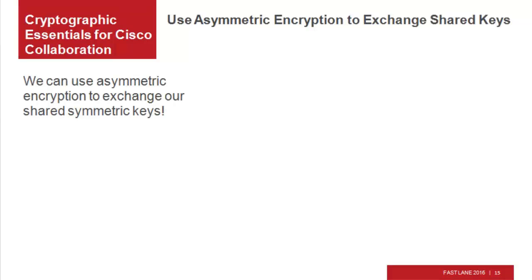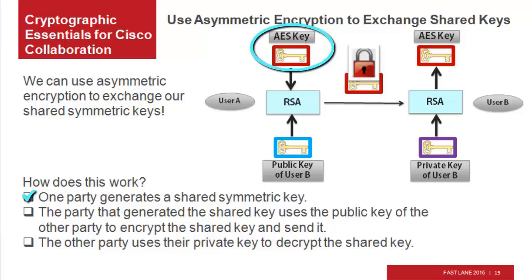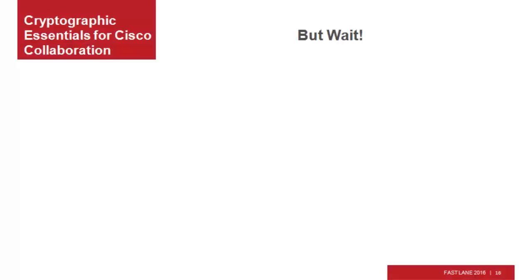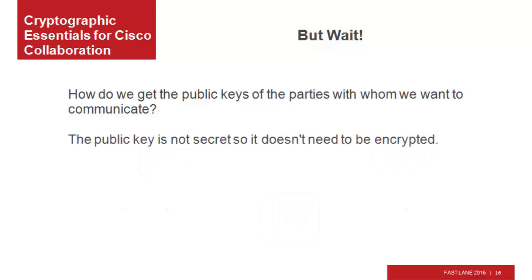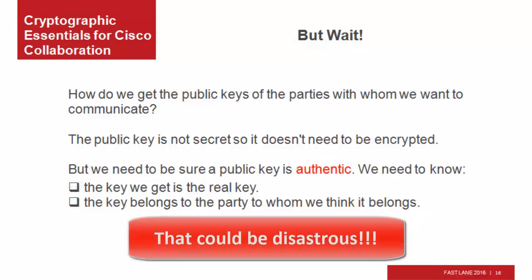We can use asymmetric encryption to exchange our shared symmetric keys. One party generates a shared symmetric key. That key needs to be exchanged with the other party. The generating party uses the public key of the other party to encrypt the shared key and send it. The other party uses their private key to decrypt the shared key. But how do we get the public keys of the parties with whom we want to communicate? The public key is not secret, so it doesn't need to be encrypted, but we need to be sure a public key is authentic — that the key we get is the real key, hasn't been changed, and belongs to the correct party.